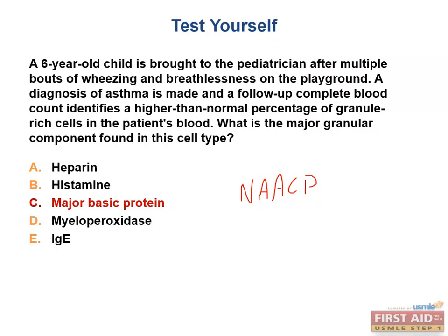As for the other answer choices: heparin is a component of basophil and mast cell granules, and is an anticoagulant in type 1 hypersensitivity allergic degranulation. Histamine is also released by the basophil and the mast cell, and is a vasodilator used in allergic degranulation. Histaminase is released by the eosinophil to limit these reactions. Myeloperoxidase is expressed in the neutrophil and is used to destroy bacteria. Lastly, IgE is made by plasma cells. The exam first identified one cell type and then asked for a pathognomonic protein made by that cell type.